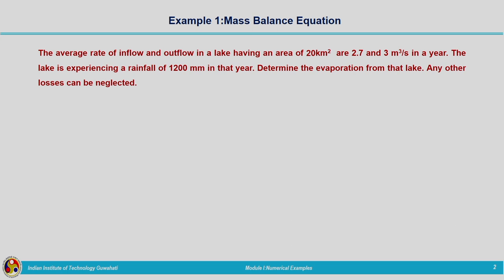We will start with one example. The question is: the average rate of inflow and outflow in a lake having an area of 20 kilometres square are 2.7 and 3 metre cube per second in a year. The lake is experiencing a rainfall of 1200 millimetres in that year. Determine the evaporation from that lake; any other losses can be neglected.